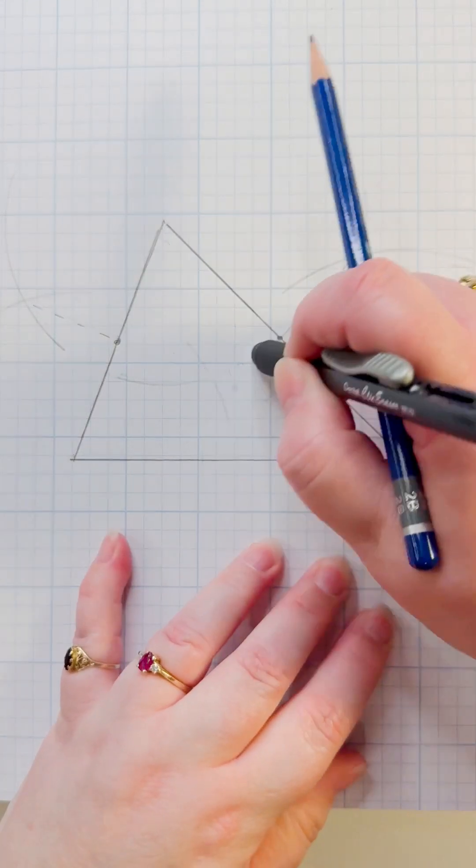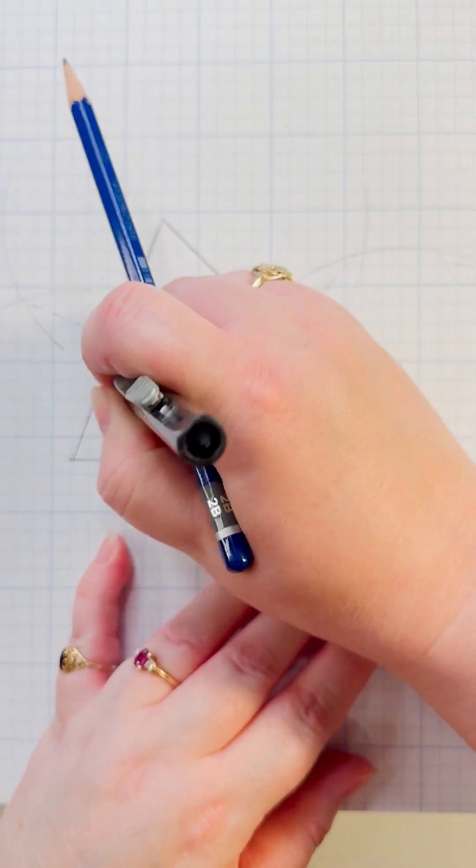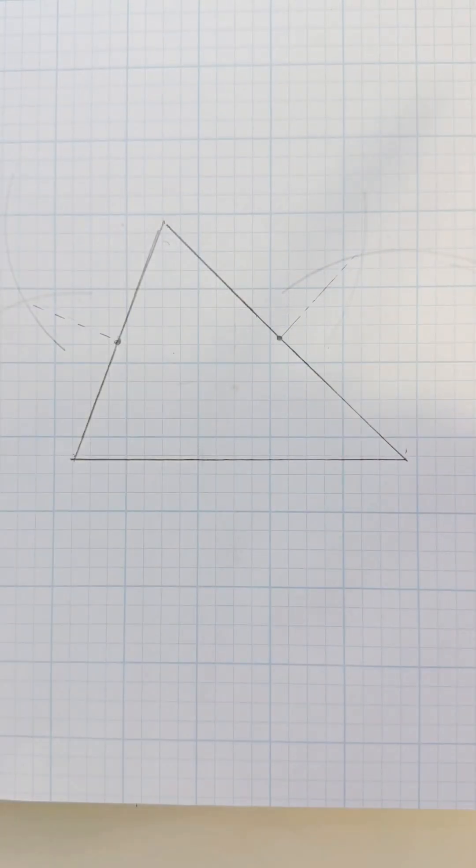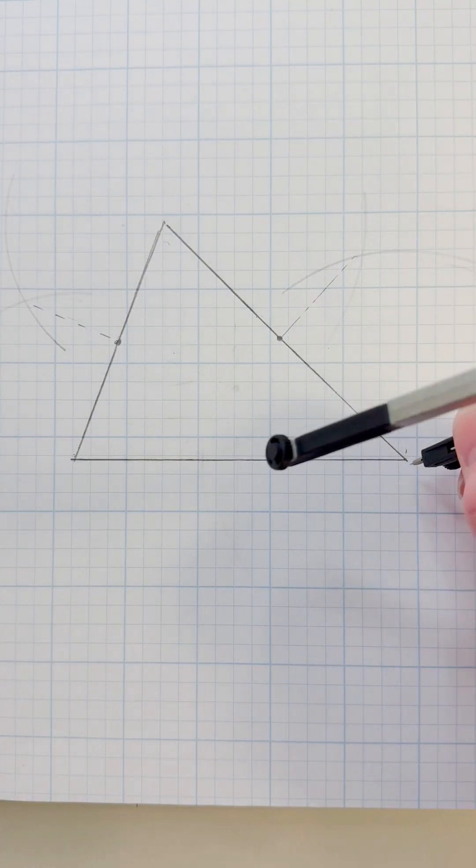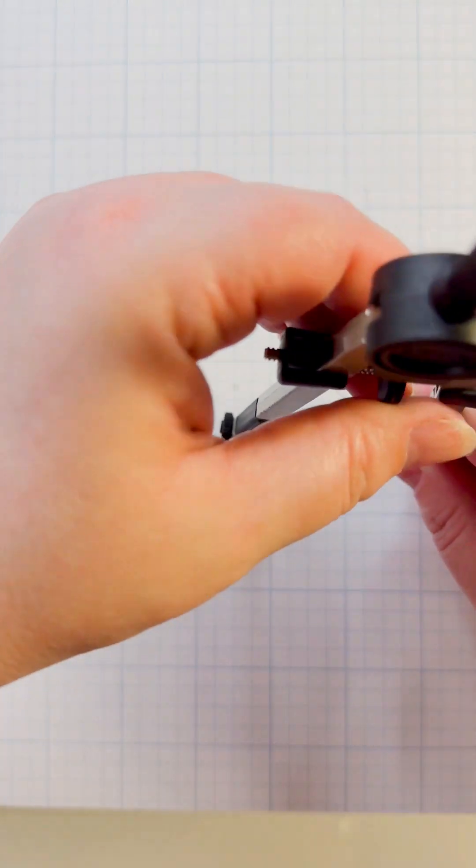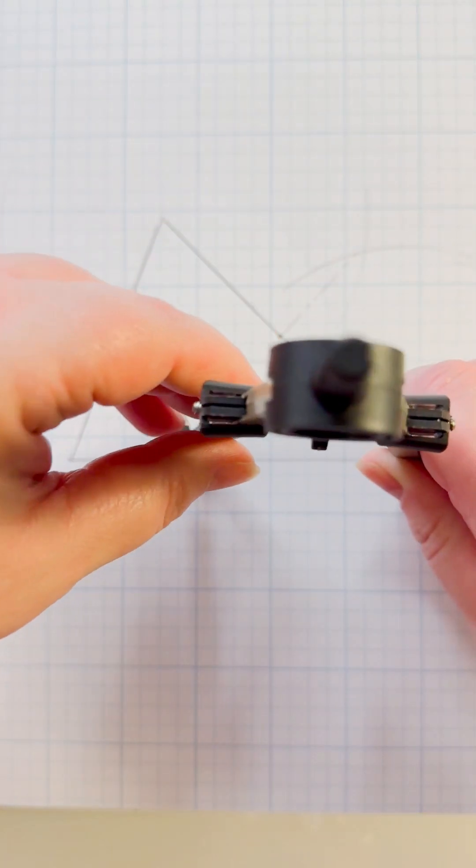And I'm erasing this stuff in the middle because you won't need it and it'll just be confusing. So for the third line we're doing the same thing. Adjust your compass so it's a little more than half.